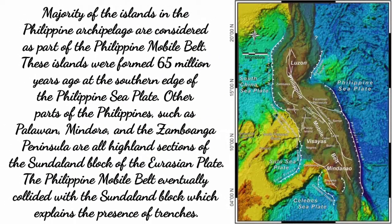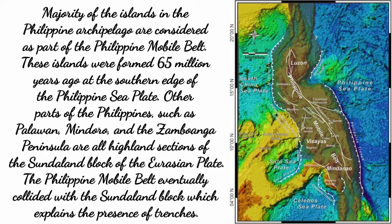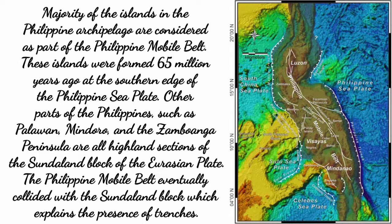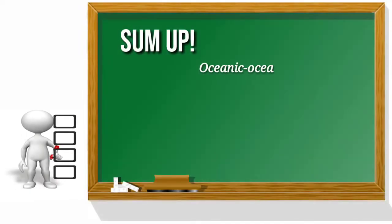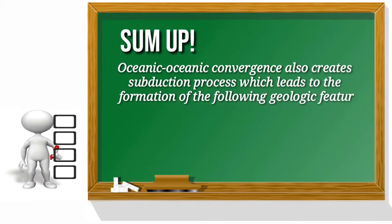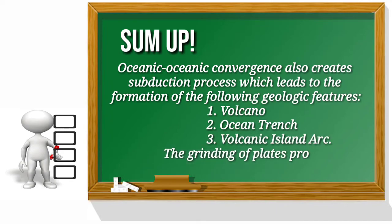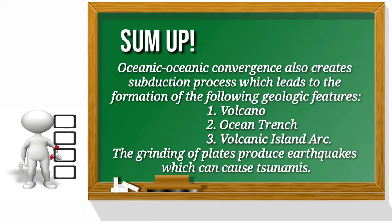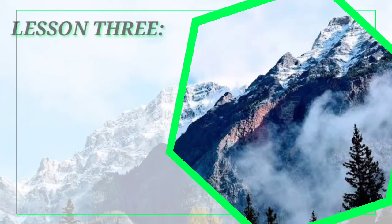The island arcs are collectively called the Philippine Island Arc System. Majority of the islands in the Philippine archipelago are considered part of the Philippine Mobile Belt. These islands were formed 65 million years ago at the southern edge of the Philippine Sea Plate. Other parts of the Philippines such as Palawan, Mindoro, and the Zamboanga Peninsula are highland sections of the Sundaland block of the Eurasian Plate. The Philippine Mobile Belt eventually collided with the Sundaland block, which explains the presence of trenches. In summary, oceanic-oceanic convergence also creates subduction, leading to the formation of volcanoes, ocean trenches, and volcanic island arcs. The grinding of plates produces earthquakes, which can cause tsunamis.